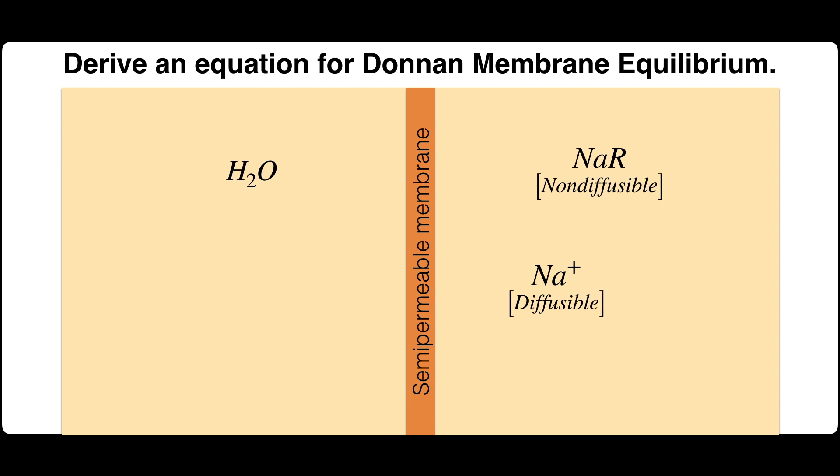This phenomenon of distribution of an electrolyte in the presence of non-diffusible ion was first predicted by Gibbs and later on was demonstrated and proved by Donnan. Hence such type of equilibrium is known as Donnan membrane equilibrium.